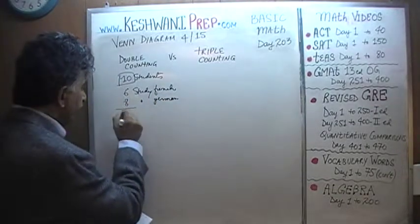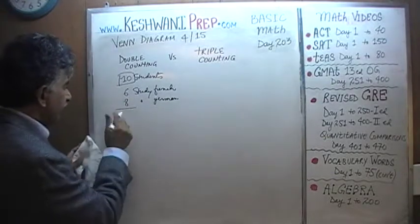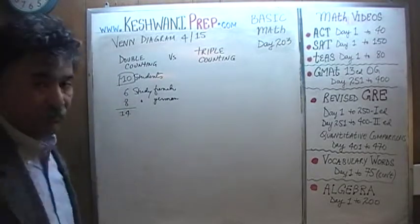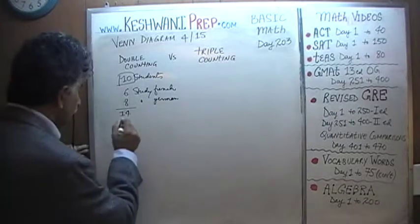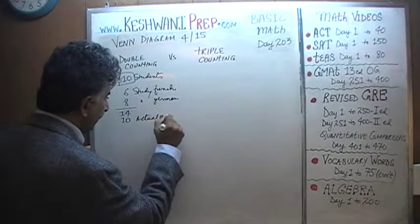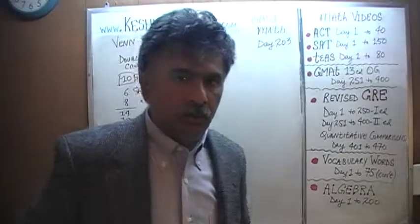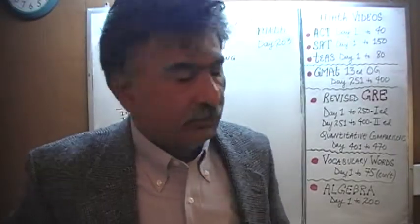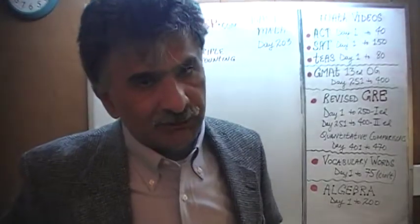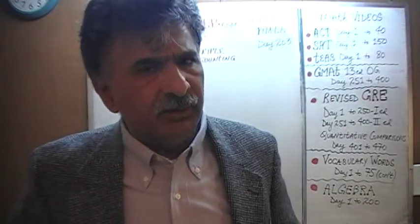But if we add up the two figures, we get 14. We already know that there are only 10 people actually. There is no doubt about that — that's what we are told. We are told that in a group of 10 students, 6 of them tell us that they study French, and 8 of those 10 students tell us that they study German.